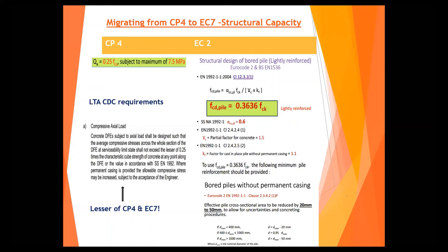This poses a problem many people don't notice. When you use a very high structural capacity, you allow the pile to take a higher load. The LTA Civil Design Criteria takes the worst of both: you take 0.25, check it, then use the lesser of both. Same for reinforcement: in CP4, the minimum is 0.5%. For EC2, depending on the diameter, they recommend a different percentage.